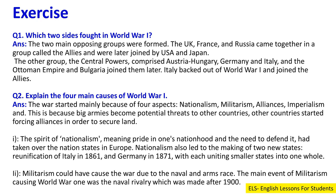Big armies became potential threats to other countries, and other countries started forming alliances in order to secure land. The spirit of nationalism — meaning pride in one's nationhood and the need to defend it — had taken over the nation-states in Europe. Nationalism also led to the making of two new states: the reunification of Italy in 1861 and Germany in 1871. Militarism could have caused the war due to the naval and armed race; the main event of militarism causing World War One was the naval rivalry which intensified after 1900.